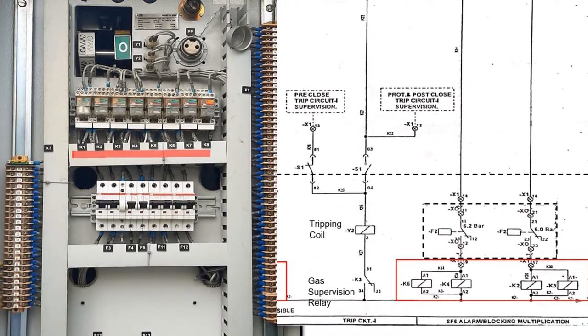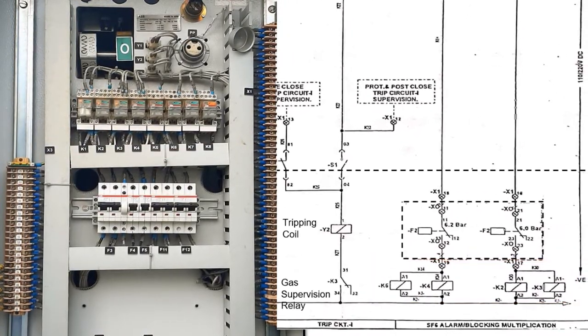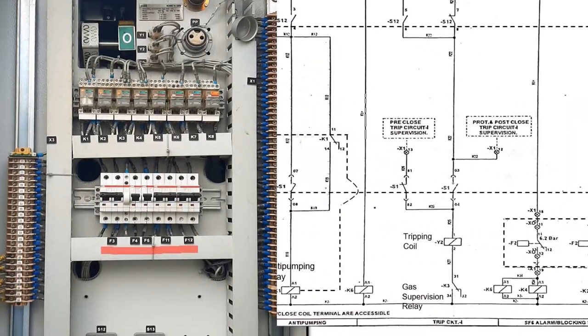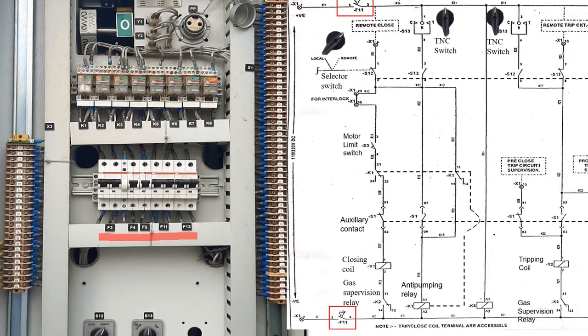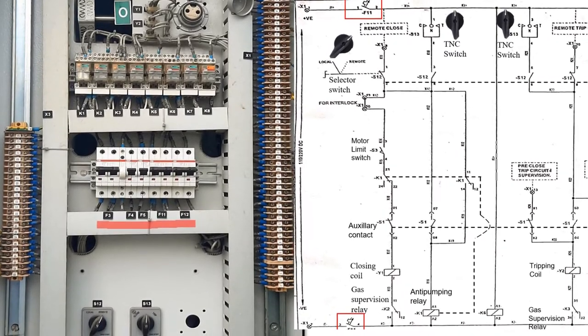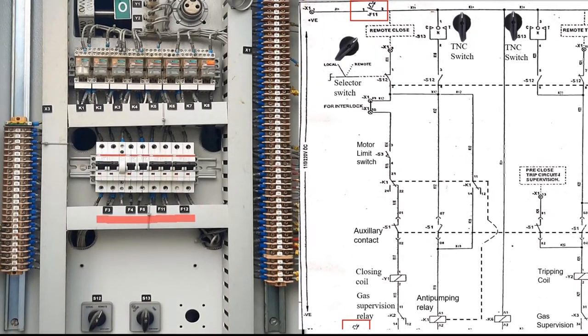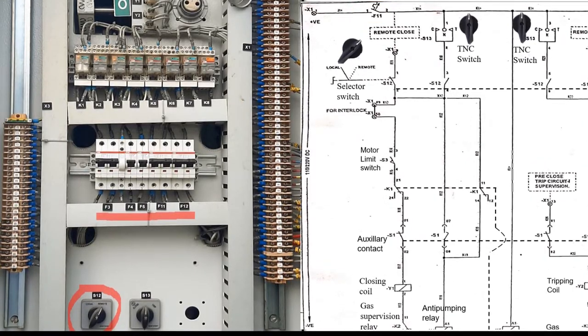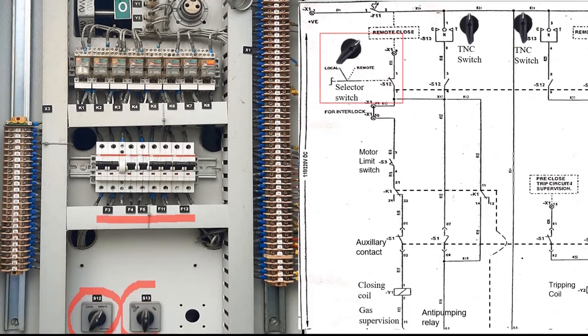Below that we have fuses or MCB denoted by F as shown here, and at the bottom we have selector switch S12 and TNC switch S13 shown in both the circuit breaker and the wiring diagram side by side.